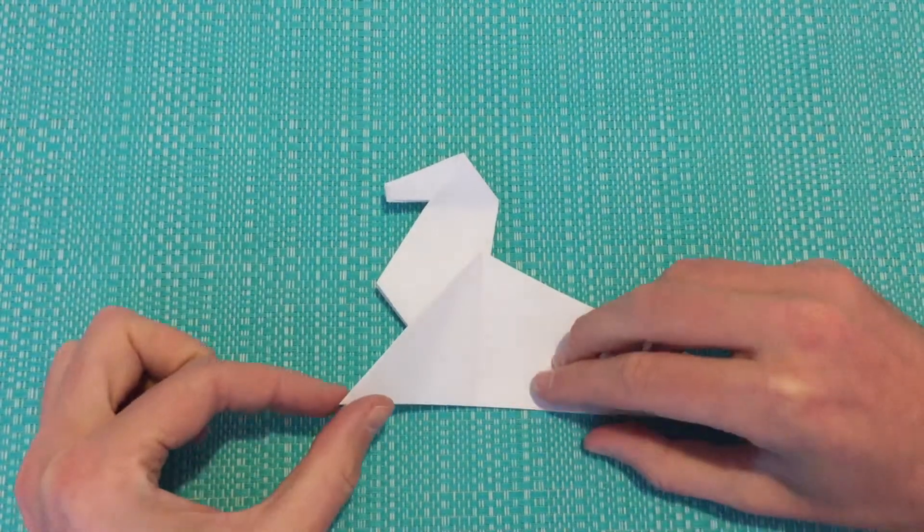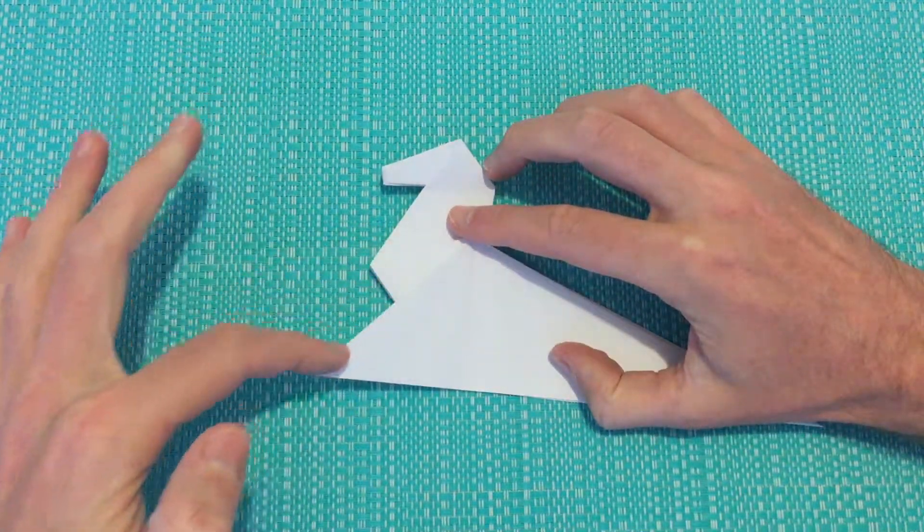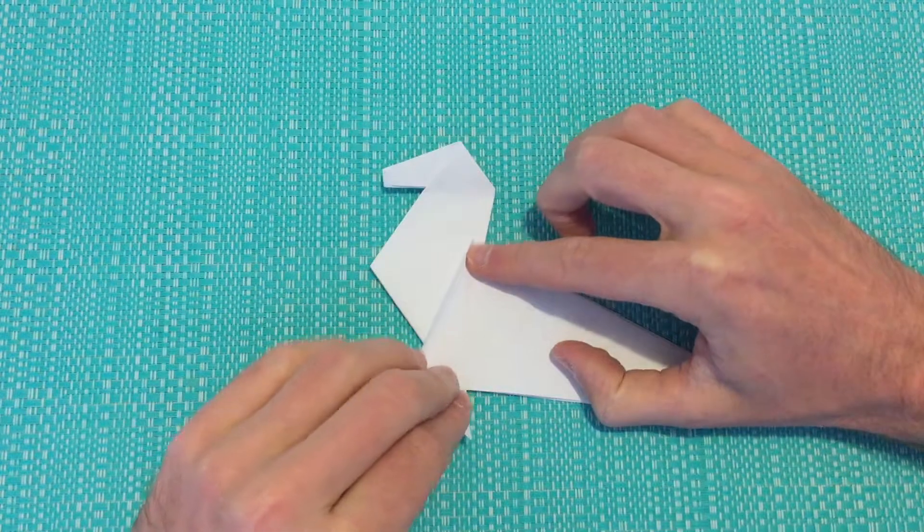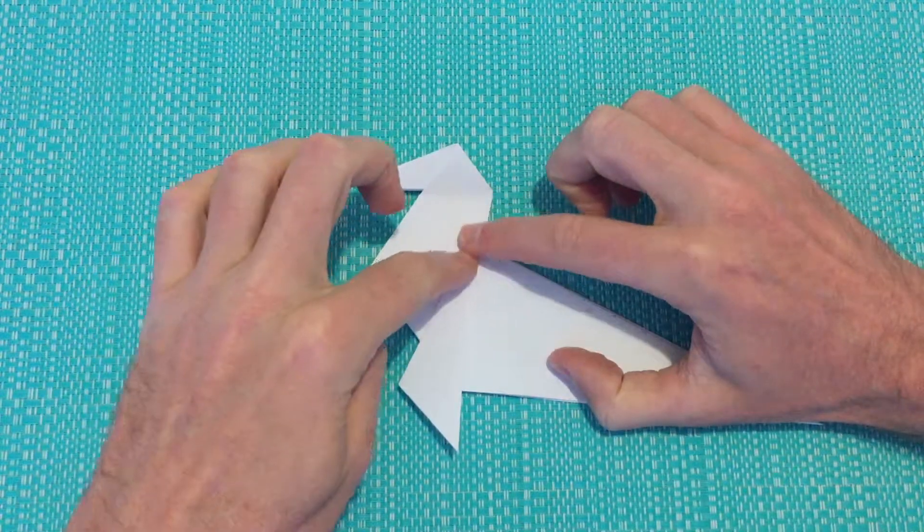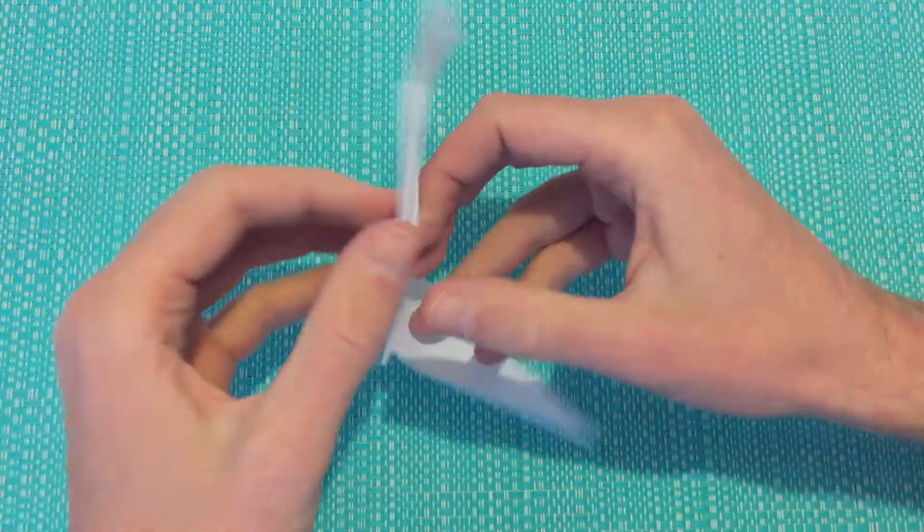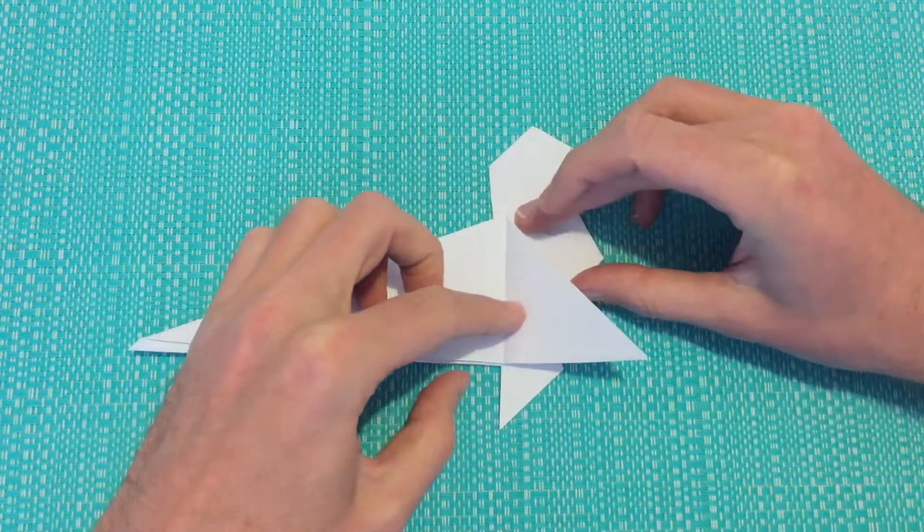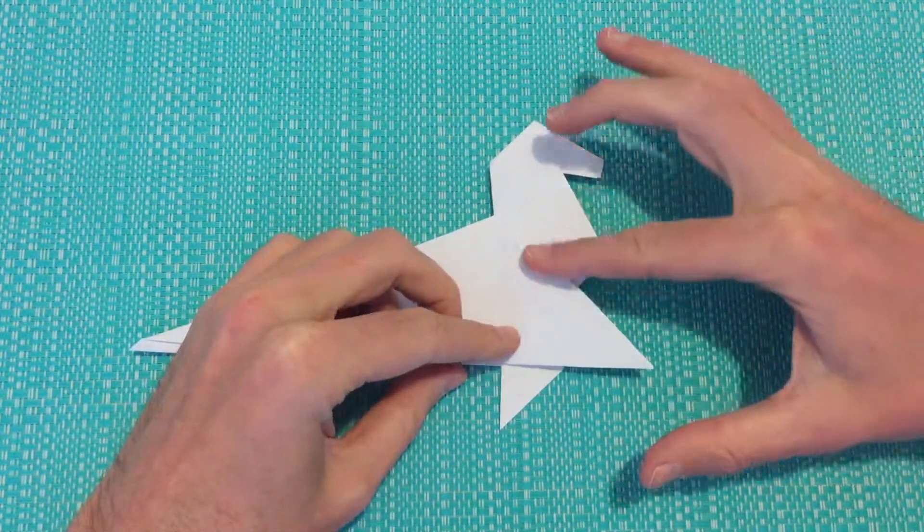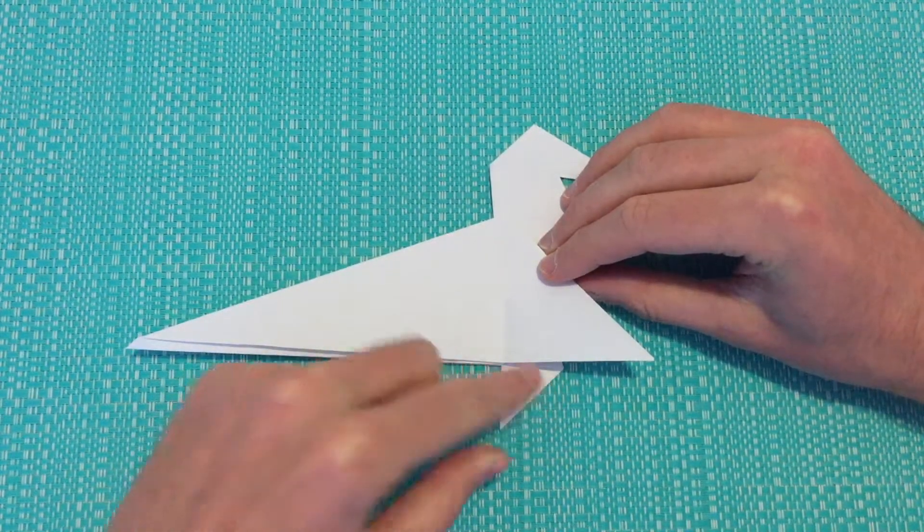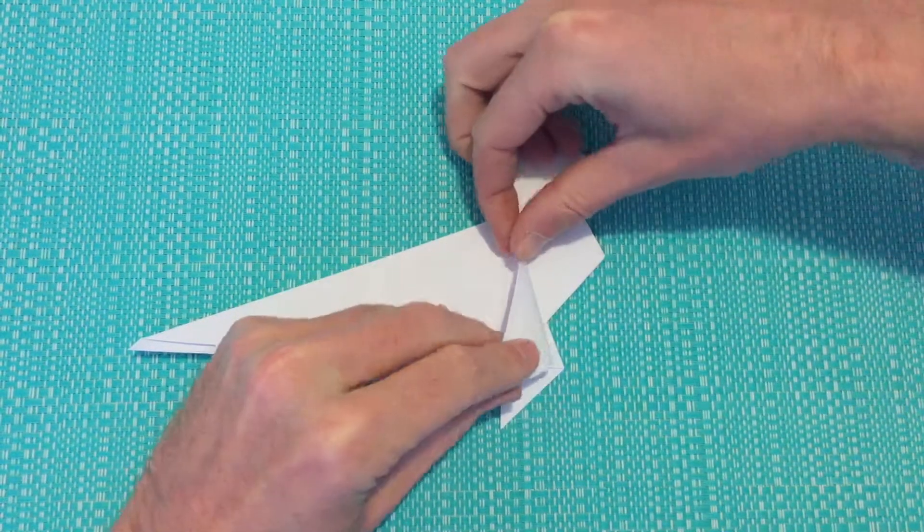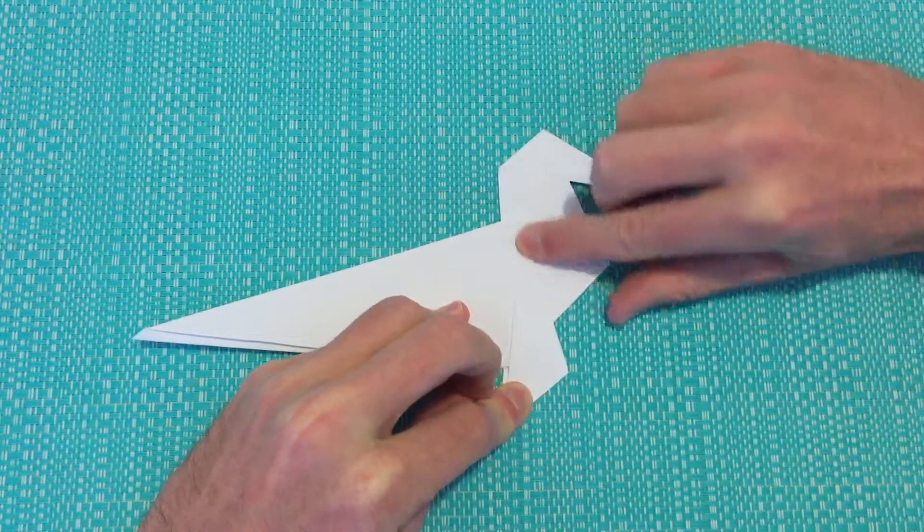And we'll take hold of this bottom left point. We have a crease line running along here. We'll be bringing this edge along to that crease line and creating a new crease. And we can flip our model over. We have another flap. We'll fold it forward. And then we're bringing this edge along to the crease line. We're just matching this other leg that's down here. And we'll create a nice firm crease.